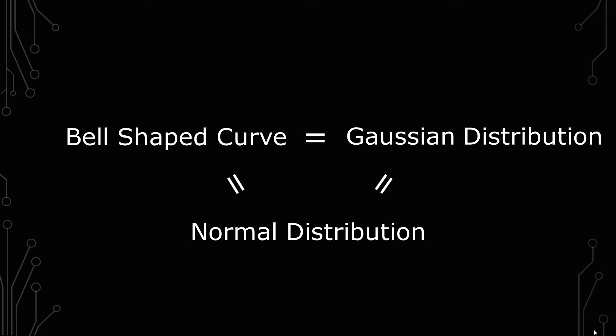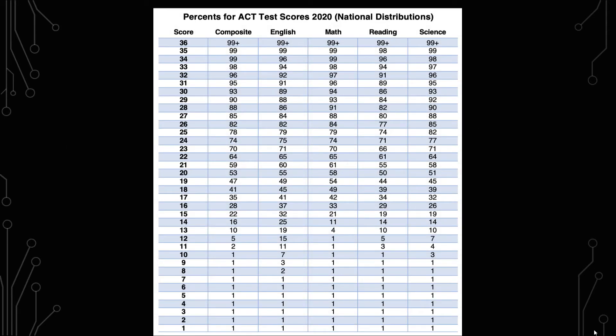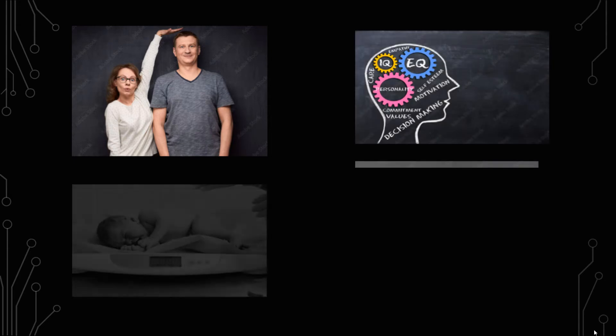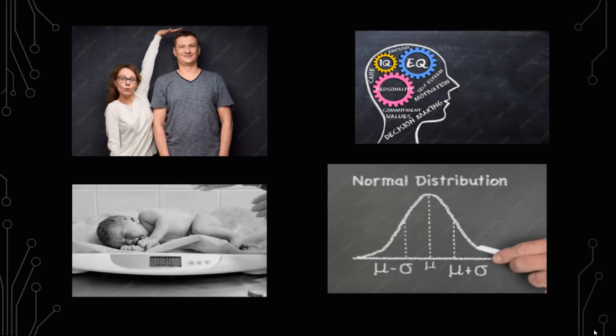And the normal distribution is used for a lot of things. If you've taken the ACT or SAT test, you've probably been given a score in terms of percentile. That percentile is actually based off the normal distribution and where you placed in it. Another example would be height, IQ, birth weight. Pretty much anywhere the central limit theorem is applied, that's where you'll find the normal distribution.